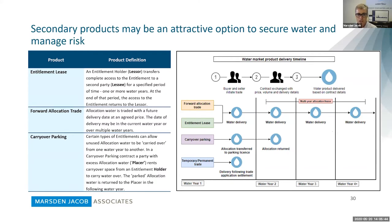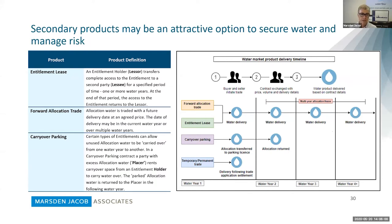A forward allocation trade is allocation water traded with a future delivery date at an agreed price. It might be this water year, next year, or multiple years ahead. It can be a really good way of de-risking your access to water next year, but it comes with a price premium, which we'll discuss shortly.